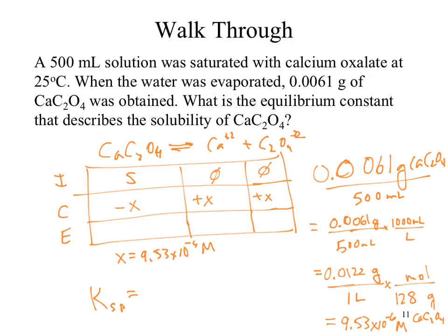KSP equals calcium ion times our oxalate. What's the calcium ion concentration? 9.53 times 10 to the minus 4. Our oxalate. Same thing. Square it. We now have our KSP. How do you guys all enter the same thing into the calculator and get something different? You got negative 5? We're sticking with negative 5 now. We now have the KSP for our compound.